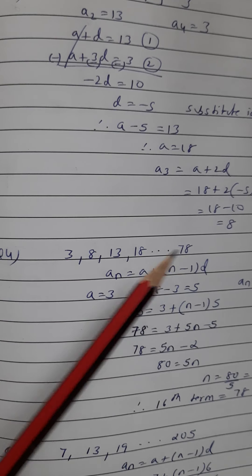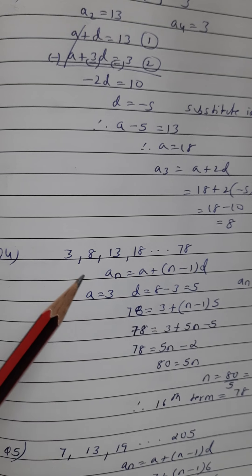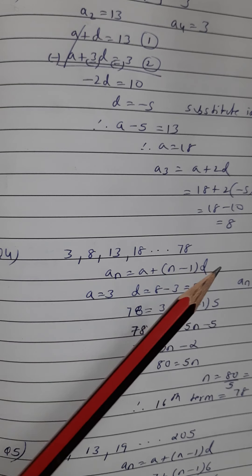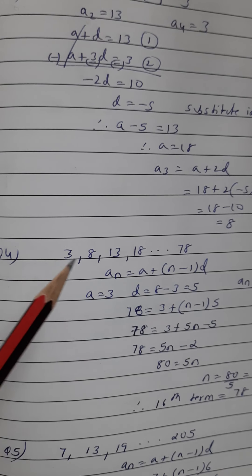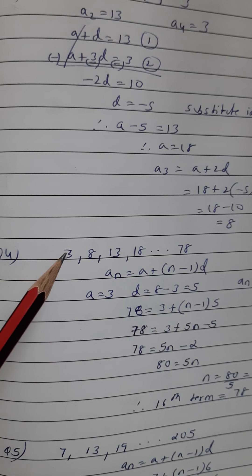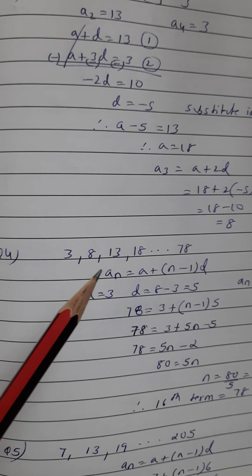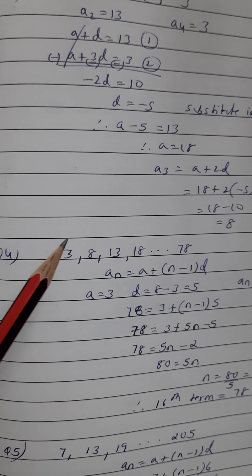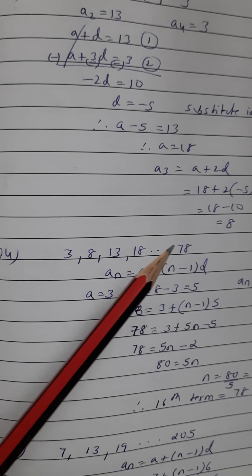So the formula is the same. What is a in this? 3. Common difference? 8 minus 3, that will be 5. And what is this a_n? a_n is actually the last term. a_n is your last term.